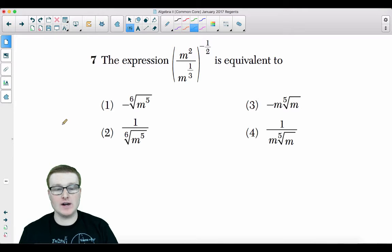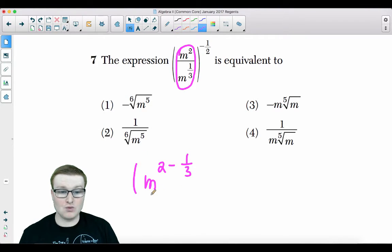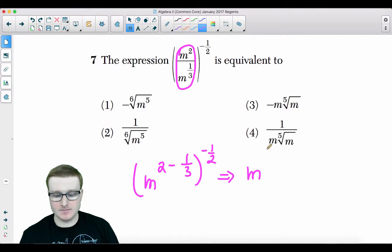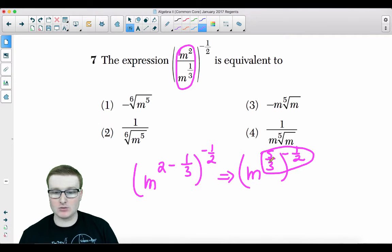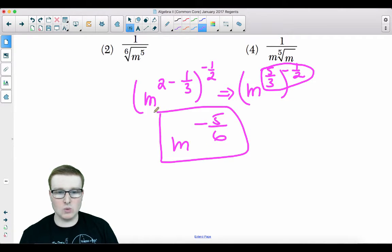Number seven, the expression m squared divided by m to the one-third raised to the negative one-half power is equivalent to what? So the best thing to do is subtract these exponents first. So m squared minus a third, right? You subtract those exponents. And then you raise all this to the negative one-half power. So two minus a third is five-thirds. You can just type that into your calculator and raise it to the negative one-half power. This is a power-to-power rule now. m to the five-thirds times negative one-half. This is m to the negative five over six power.